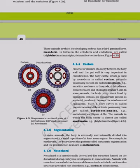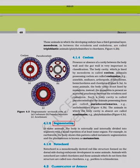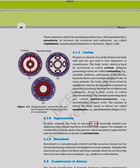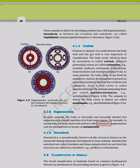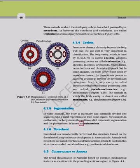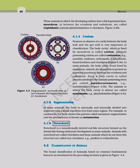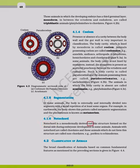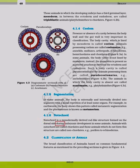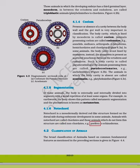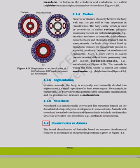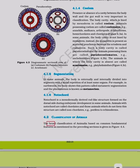In some animals, the body is externally and internally divided into segments with serial repetition of at least some organs. In earthworms, this pattern is called metameric segmentation, and the phenomenon is known as metamerism. The notochord is a mesodermally derived rod-like structure formed on the dorsal side during embryonic development. Animals with a notochord are called chordates; those without it are non-chordates, for example Porifera to Echinoderms.